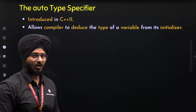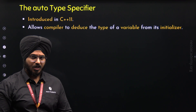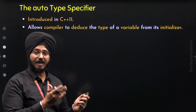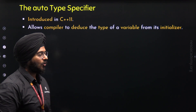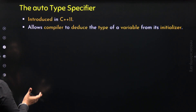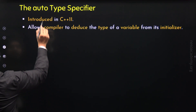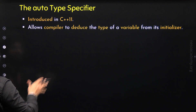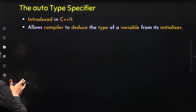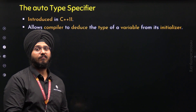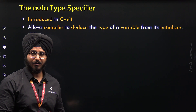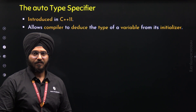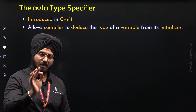What is an initializer? An initializer is a value which is used to initialize a variable — that's why it is called an initializer. The word Auto means automatic, and Type Specifier is something that is used to specify the type. So Auto Type Specifier allows the compiler to specify the type of a variable automatically, without the need of us to specify the type, based on the initializer.